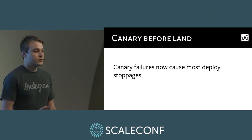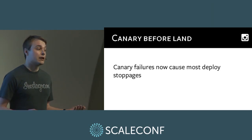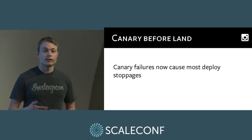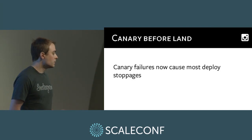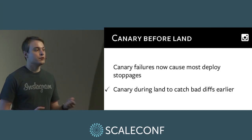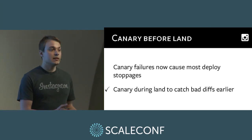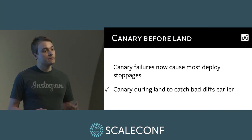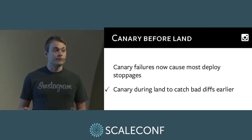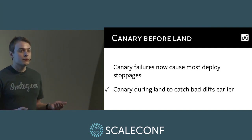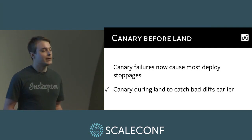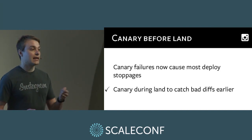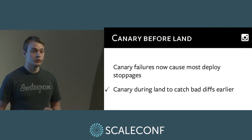The problem with static thresholds is they have to be relatively generous because error rates fluctuate during the day, vary from cluster to cluster, and can be influenced by spammers. Instead, we're looking at collecting the same stats from a set of control machines in the same cluster as the canary, and looking at the difference between canary and control to detect changes — hopefully catching smaller problems while keeping false positive rates reasonable. Most cases of deployment halting are due to canary failures requiring someone to triage and revert. So we're looking at adding a canary step during the Landcastle job — after the test suite passes, canary the diff on a production machine, test the same thresholds, and fail the land if they don't pass. This wouldn't replace the rollout canary but would keep bad commits out of master.